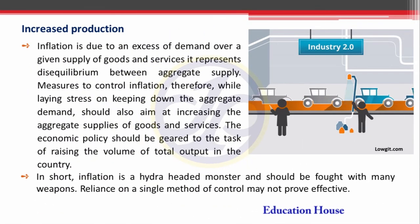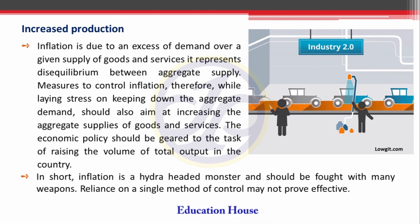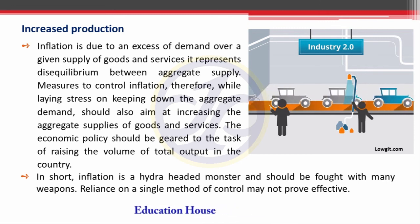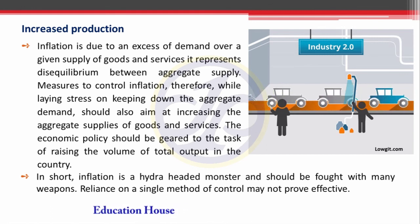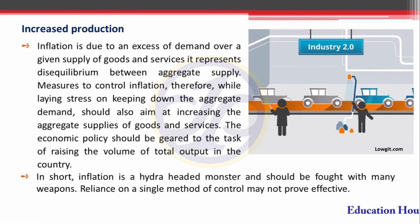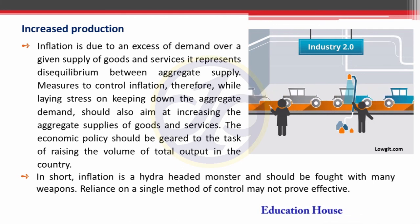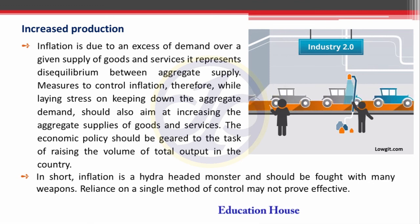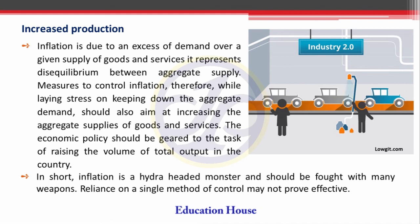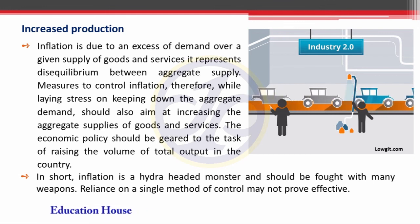Another measure is Increased Production. The government tries to increase production by expanding and promoting different industrial sectors. If production increases, then automatically supply increases. In the context of demand, if sufficient supply is available, there will be no possibility of any scarcity. If scarcity does not arise, automatically prices can be controlled and inflation can be controlled. If production increases, then supply increases in the market, and if supply increases, there will be no scarcity, which will be very beneficial for the economy.